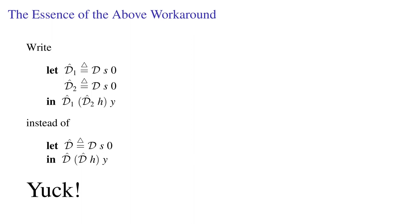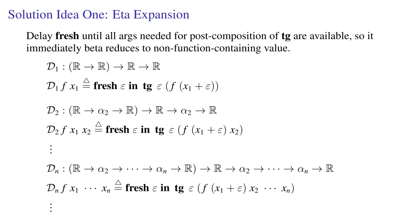We want programmers to just take derivatives and get the right answer and not have to worry about what's under the hood. So here's an idea for accomplishing this more transparently. We could use eta expansion. We would delay the fresh until all the arguments needed for post-composition of tangent are available, so it immediately beta reduces to a non-function containing value.